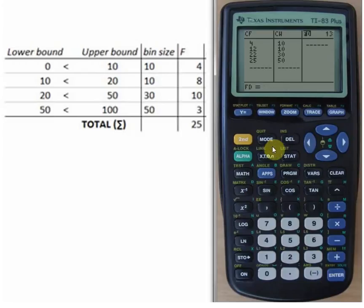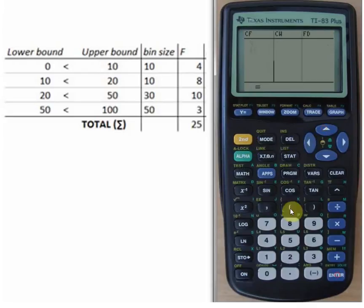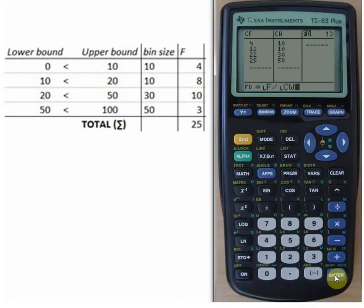We can calculate it by taking the frequency and dividing it by that class width and now we also have the frequency densities. I hope you got the idea of adding frequency tables to your TI-83 and in the next video I'll show you how to create diagrams.